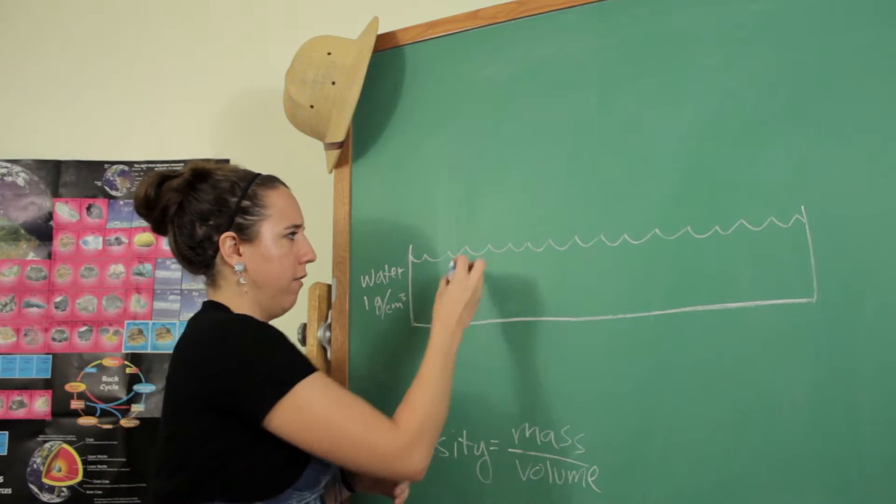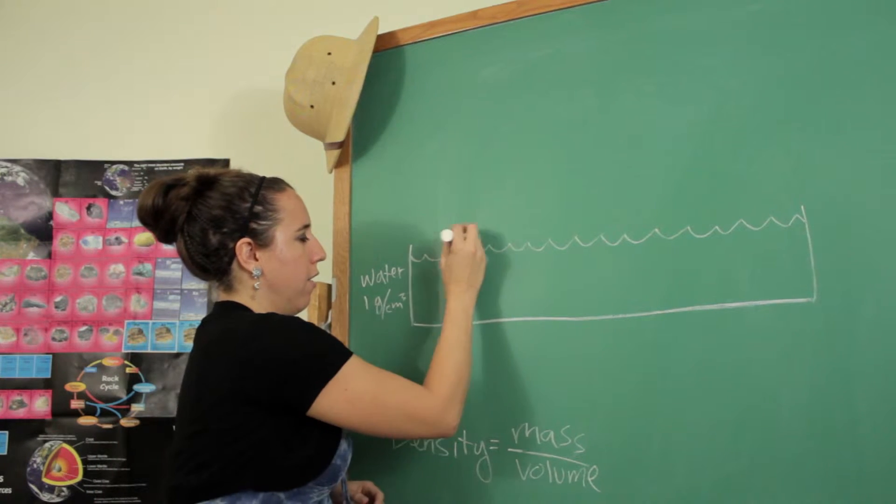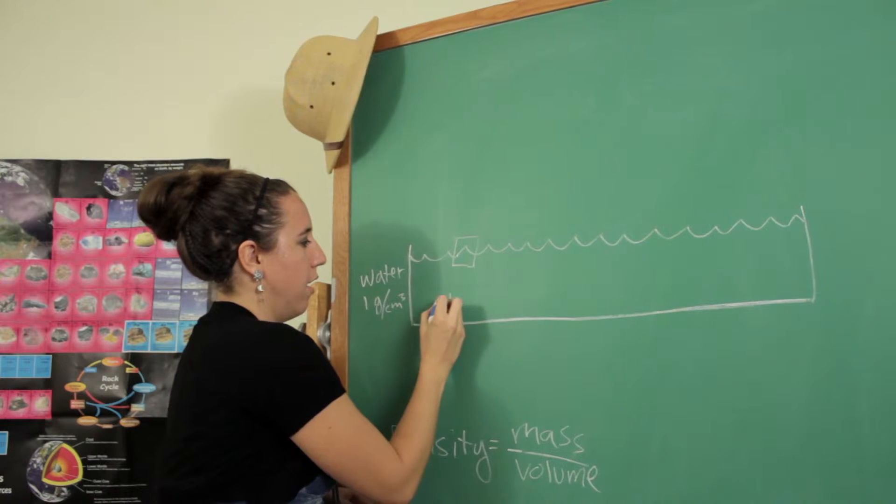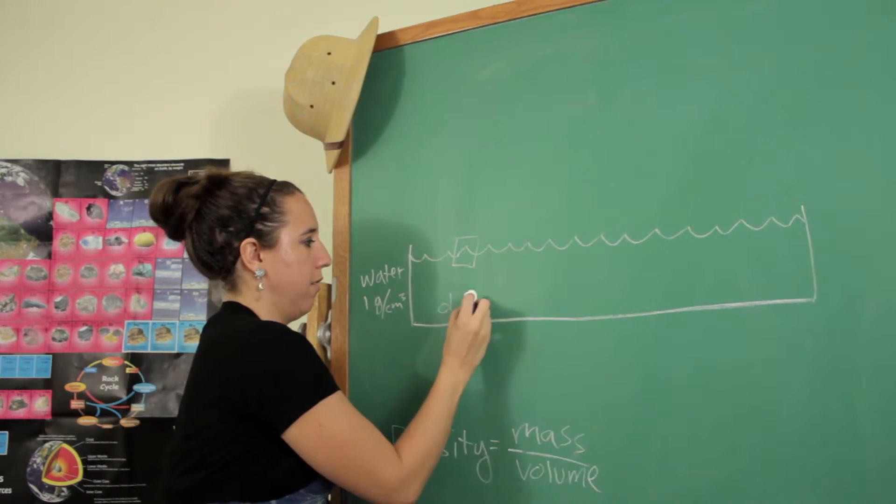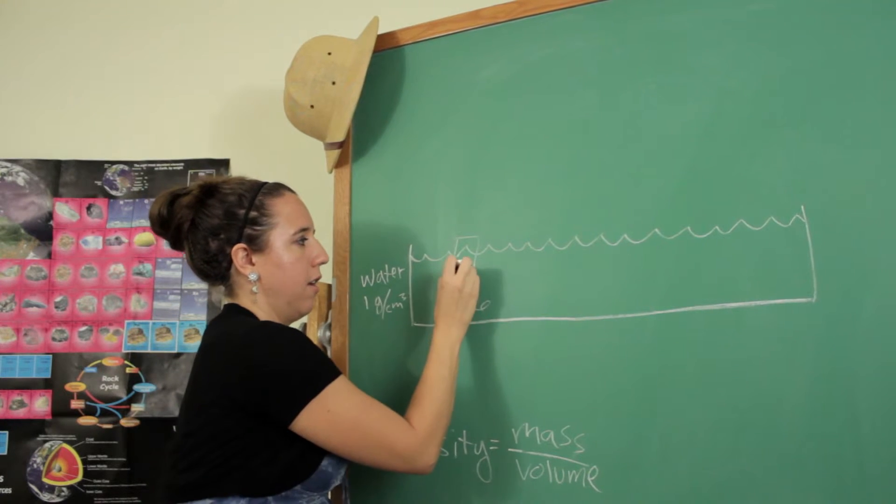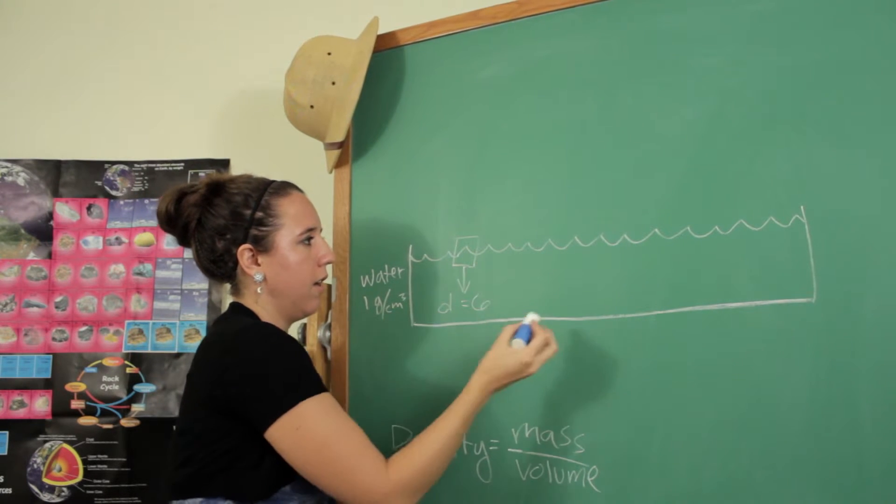So let's say we have a big old block of lead, and it's just like a solid cube. Its density is, let's just say it's six, something like that. It's going to sink.